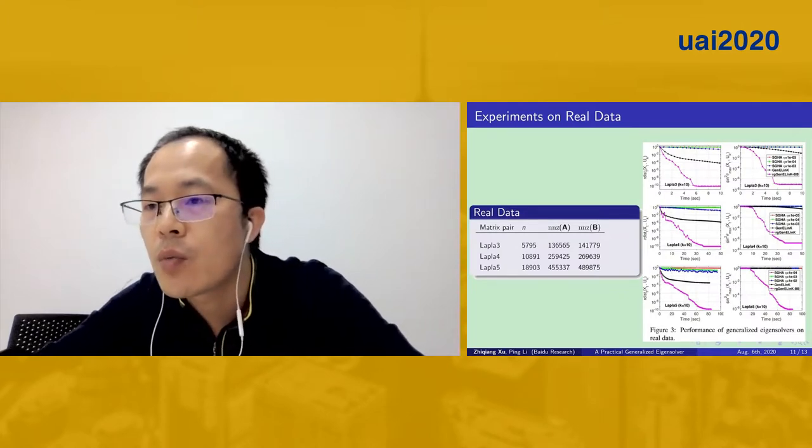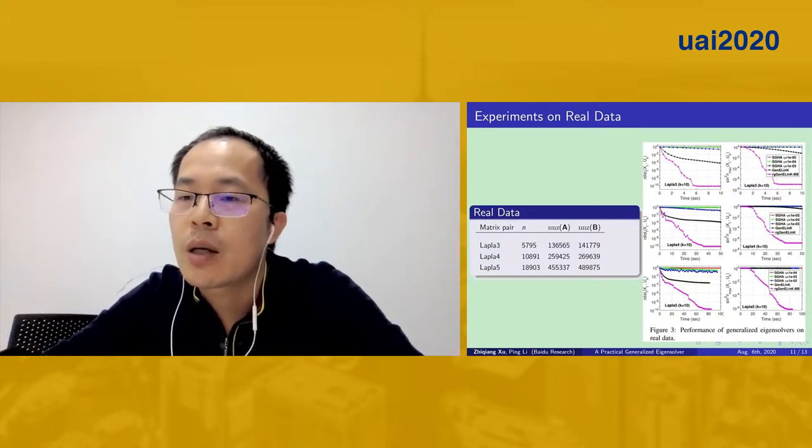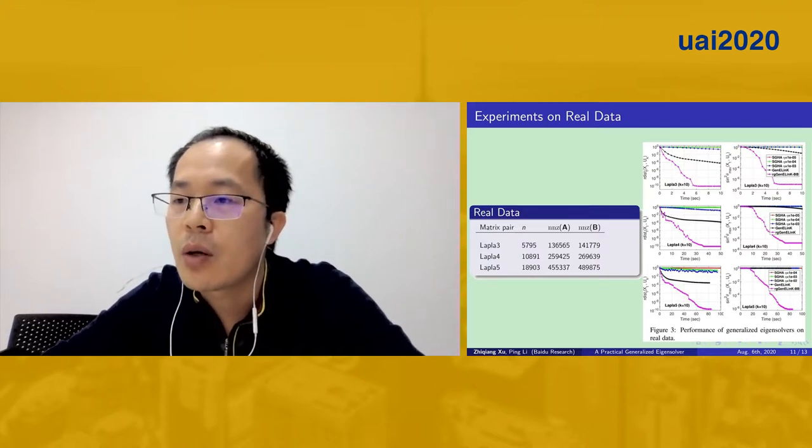We also test on challenging real data with small gaps. Again, our algorithm works very well, while the other two, especially the stochastic generalized Hebbian algorithm, are almost not working. More experiments can be found in our paper.